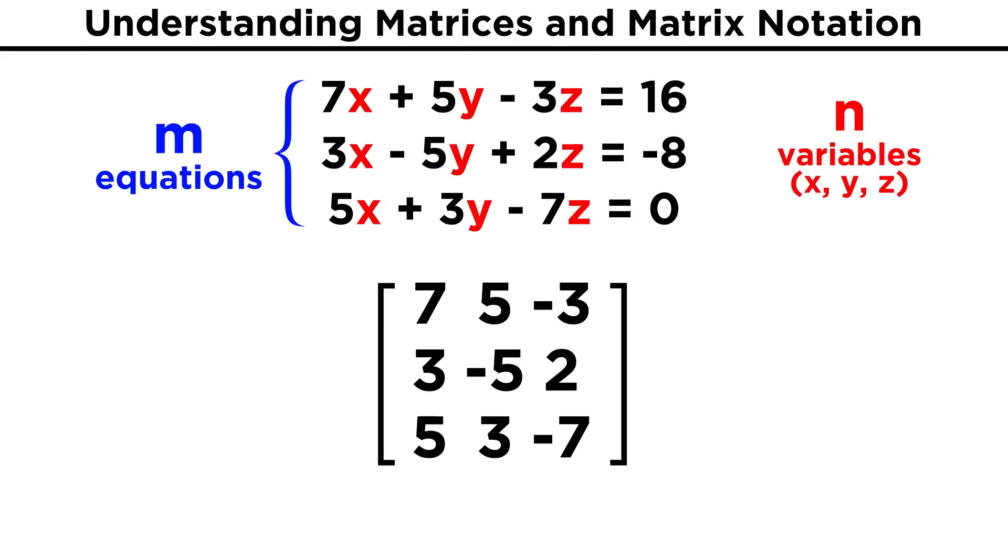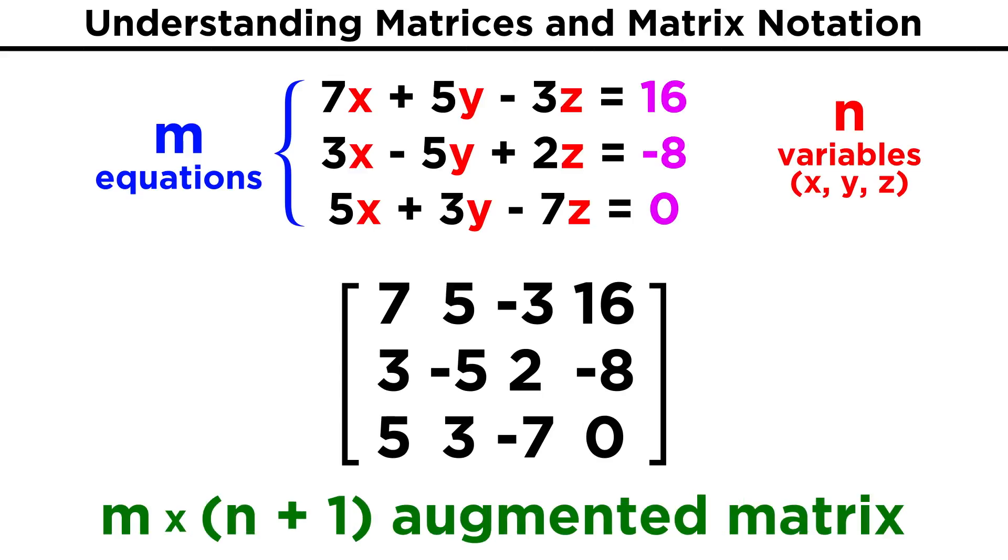In general, a system with M equations and N variables will give us an M by N coefficient matrix, because each equation gets its own row, and each variable gets its own column. If we then include the constant terms on the other side of each equation, we will get an augmented matrix with dimensions M by N plus one.